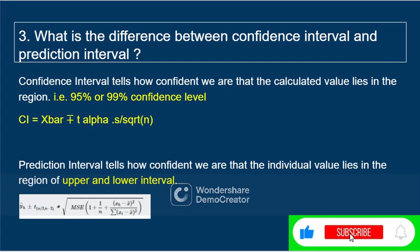Both confidence interval and prediction interval are more or less similar, but with a slight difference. The prediction interval gives the range for a particular predicted value — the upper and lower interval. Whereas the confidence interval tells how confident we are that a value lies in the region, whether it is 95% or 99% confident.